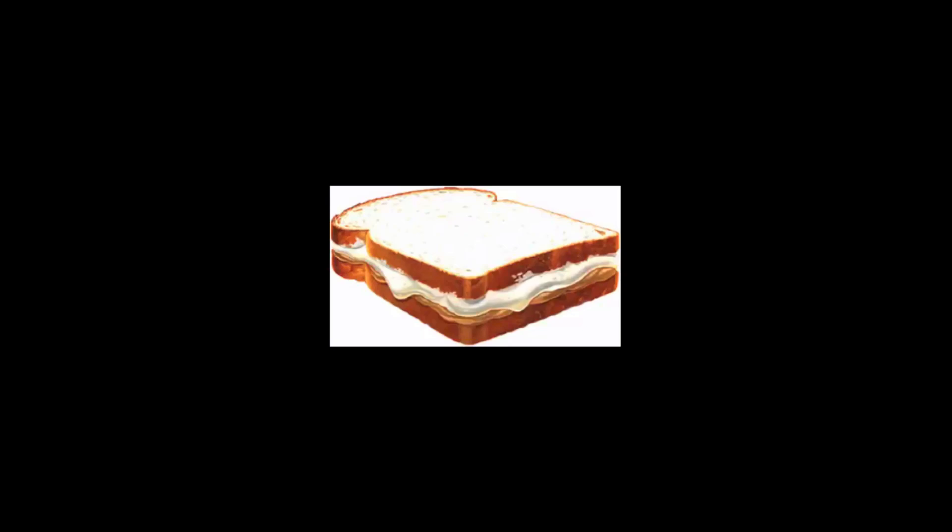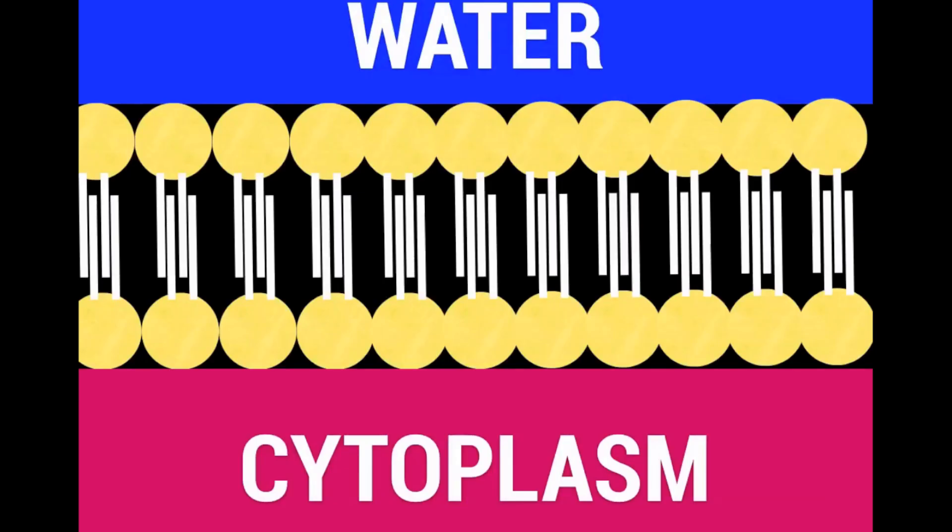It's kind of like a sandwich where the heads are made up of the phosphate groups, like the bread, and the inside is made up of the tails, the fatty acids. When you put them all together, it kind of looks like this, with the water and the cytoplasm both on the outside.